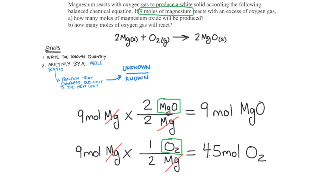The downside of balanced chemical equations is that they're written in terms of moles. But we don't measure moles in the laboratory — we measure grams or liters. So most of the time we need to convert the known quantities into moles before we can compare them to the unknown quantities. Here's an example.